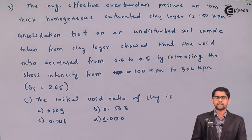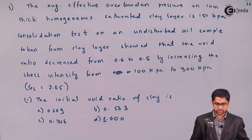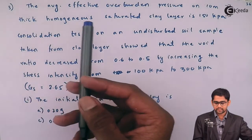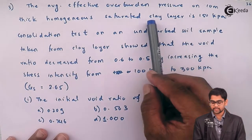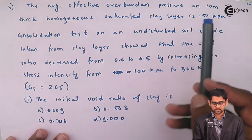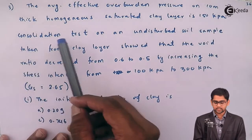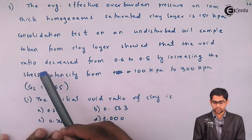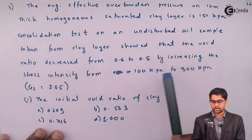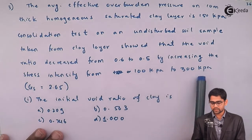Problem number three in the consolidation of soil. The statement goes as follows: the average effective overburden pressure on a 10-meter thick homogeneous saturated clay layer is 150 kilo Pascals. The consolidation test on the undisturbed soil sample taken from the clay layer showed that the void ratio decreased from 0.6 to 0.5 by increasing the stress intensity from 100 kPa to 300 kPa.